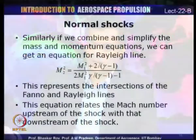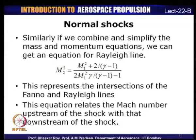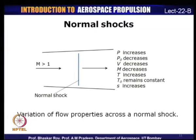Basically, we can relate the downstream properties of a normal shock with upstream properties using simple relations that primarily depend on the ratio of specific heats. For an ideal gas, we can get tabulated forms of these normal shock properties, which are related to the Fanno and Rayleigh line equations. The equation relating downstream M₂ to upstream M₁ basically represents the intersections of the Fanno and Rayleigh lines.